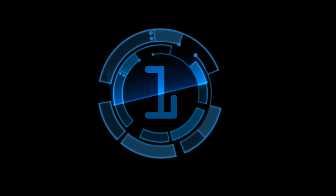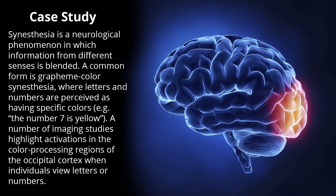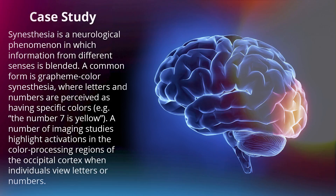For example, the number seven is yellow. A number of imaging studies highlight activations in the color processing regions of the occipital cortex when individuals view letters or numbers.